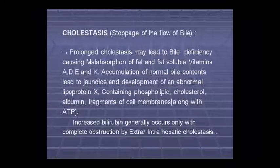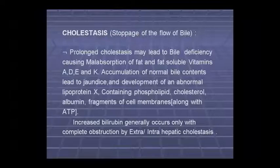In cholestasis, abnormal bile accumulation causes jaundice. Abnormal lipoprotein X develops, composed of phospholipid, cholesterol, albumin, and cell membrane fragments. In ATP, bilirubin generally increases.